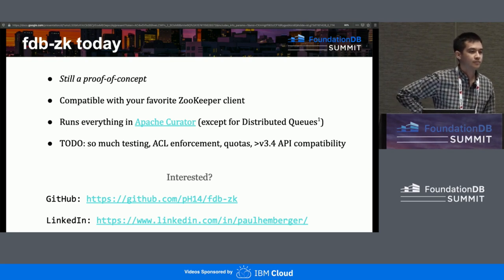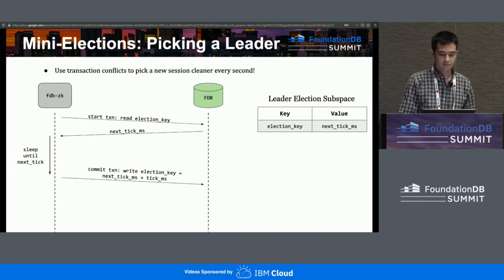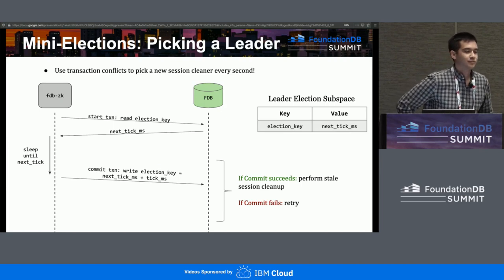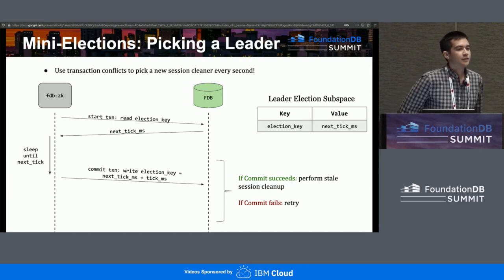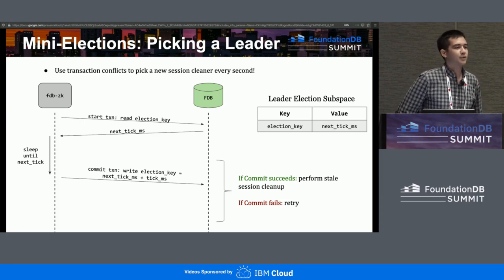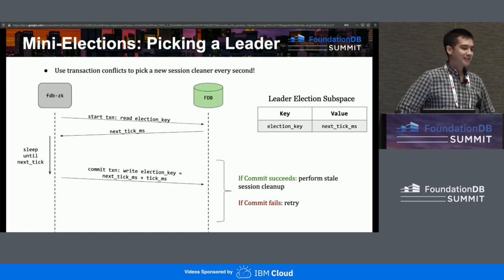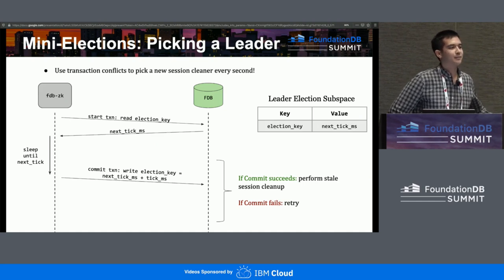Question: Is there a guarantee that only one instance is elected per second? These transactions are a few milliseconds wide, so it's possible multiple become eager. The answer is: not necessarily, but it doesn't really matter. The goal is just that we don't want every single instance running cleanup every second. One, or maybe slightly more than one, running it is fine — it's an idempotent operation since the session is already gone, so it's just cleaning it up.